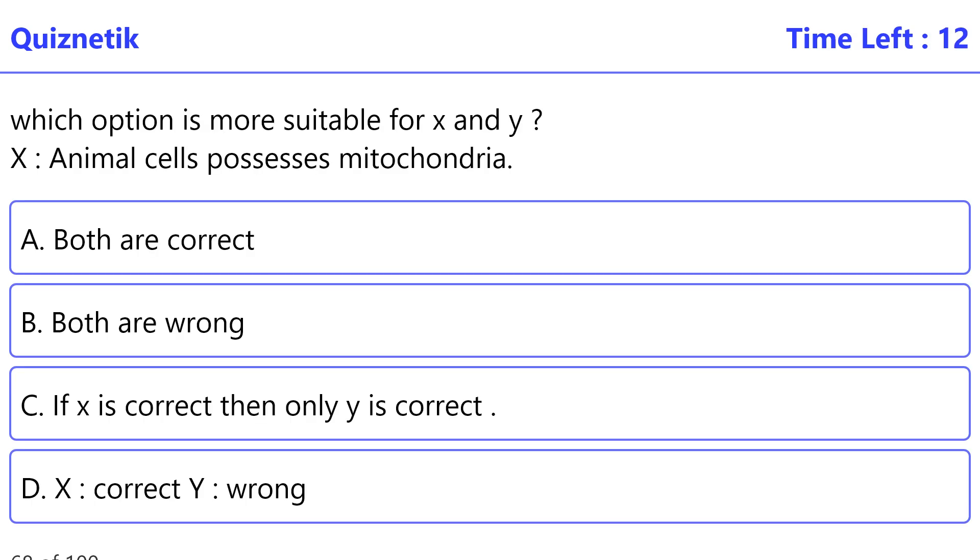Which option is more suitable for X and Y? X: Animal cells possess mitochondria. Y: In animal cell energy is released when carbohydrates are completely broken. The correct option is C. If X is correct, then only Y is correct.